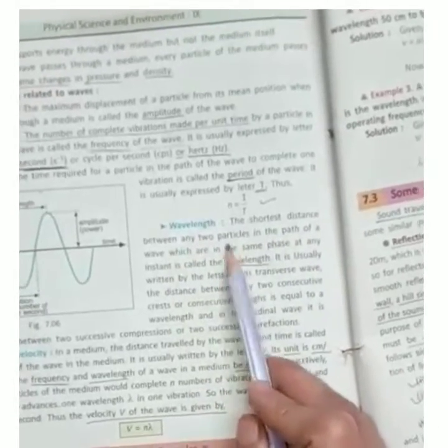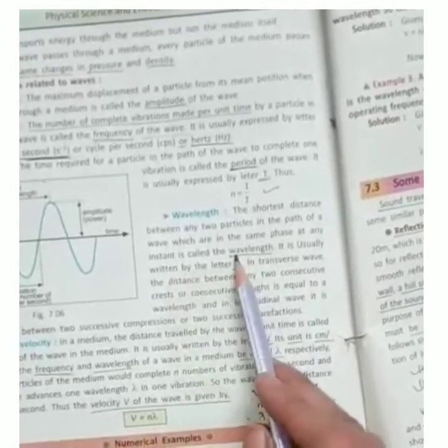Next is wavelength. This is the shortest distance between any two particles which are in the same phase at any instant. This is known as wavelength. It is usually written by the letter lambda.